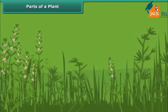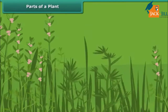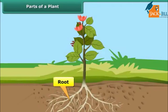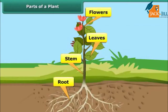Different parts of different plants are used by human beings and animals for their existence. A plant body has four main parts: roots, stem, leaves, and flowers, with each part performing a specific function. Let us look at the roots and stems in greater detail.